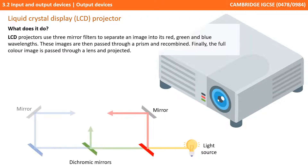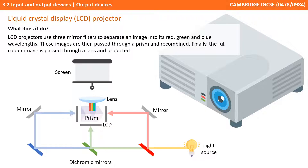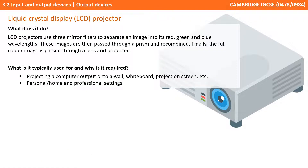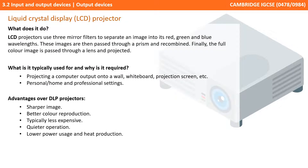The other type of projector technology you need to know about is Liquid Crystal Display or LCD projectors. These projectors use three mirror filters to separate an image into its red, green and blue wavelengths. These images are then passed through a prism and recombined. Finally, the full colour image is passed through a lens and projected. They're often used for projecting a computer output onto a wall, whiteboard or projection screen for both personal, home and professional settings. These have some advantages over DLP projectors: they provide a sharper image, better colour reproduction, are typically less expensive and quieter in operation, have lower power usage and thus produce less heat.